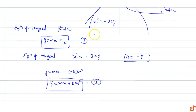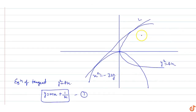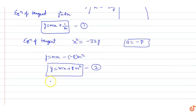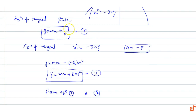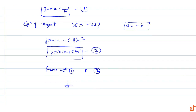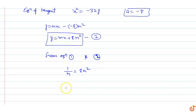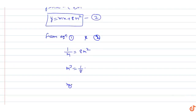Since both equations represent the same common tangent line, equation one and equation two must be identical. Comparing the constant terms: 1/m = 8m². Solving, m³ = 1/8, so m = 1/2. The slope of the common tangent is 1/2.